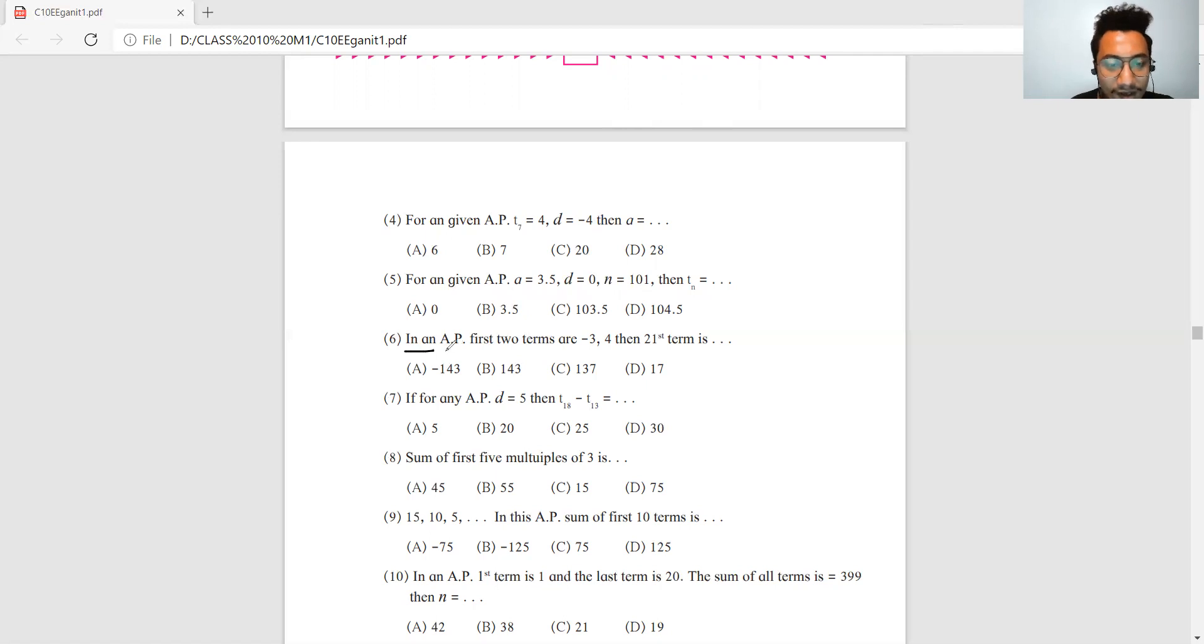Question number 6: In an AP, the first two terms are -3 and 4. You need to find the 21st term. The value of a is -3. d equals T2 minus T1, which is 4 minus -3, equals 7. You need to find the 21st term. So a's value is -3 plus (21-1) multiplied by 7. -3 plus 20 times 7 is -3 plus 140, equals 137. Your answer is 137.